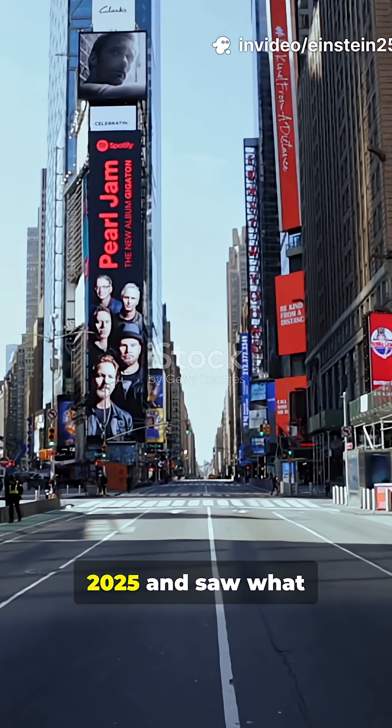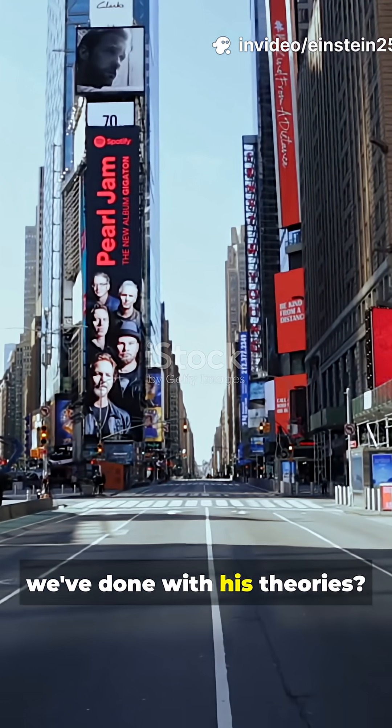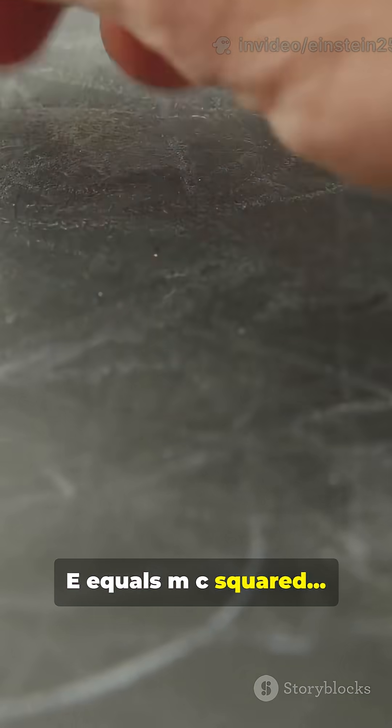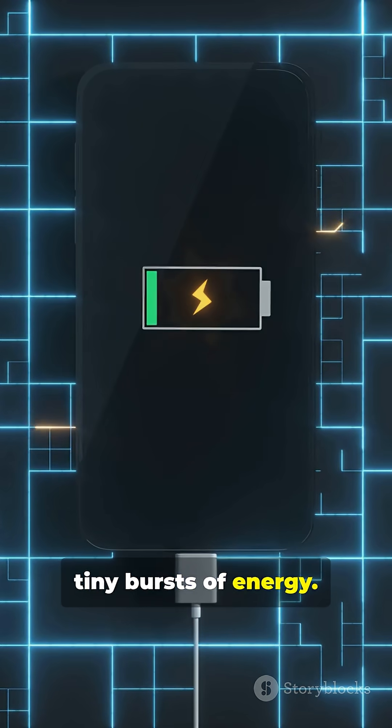What if Albert Einstein woke up in 2025 and saw what we've done with his theories? E equals MC squared, but now it powers your phone's tiny bursts of energy.